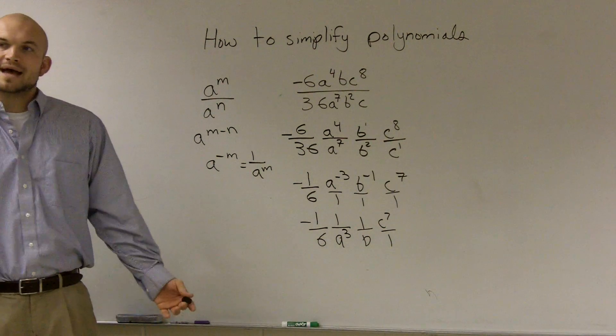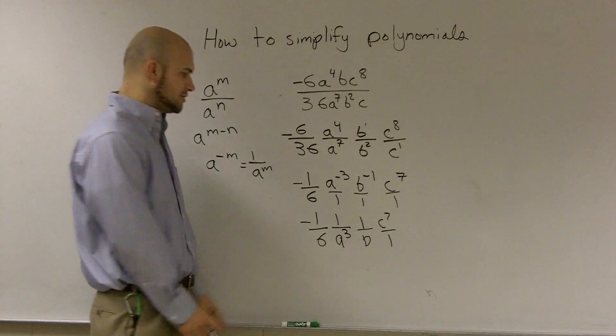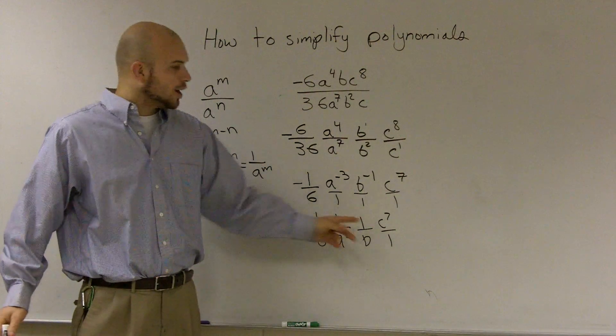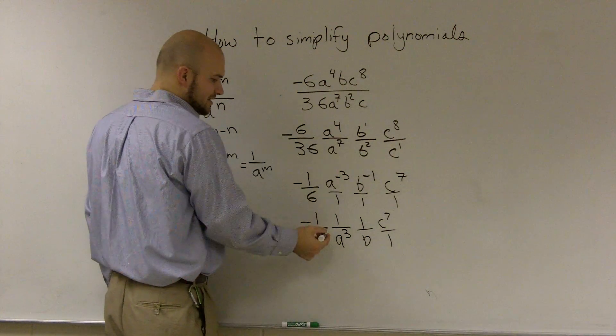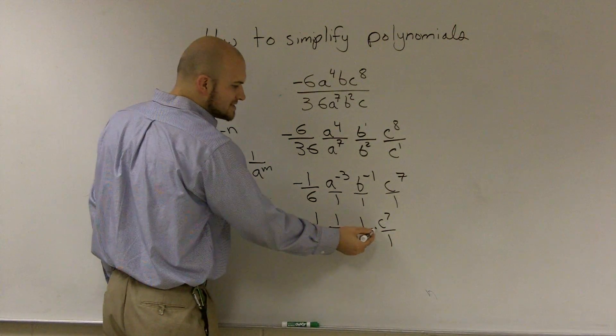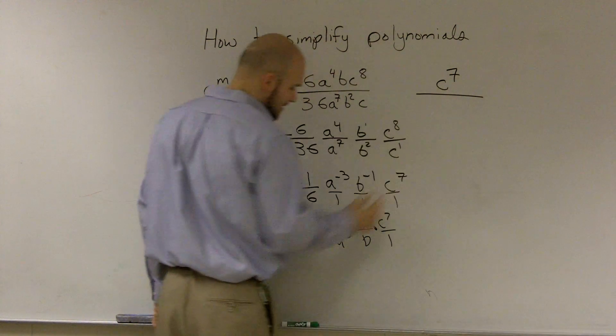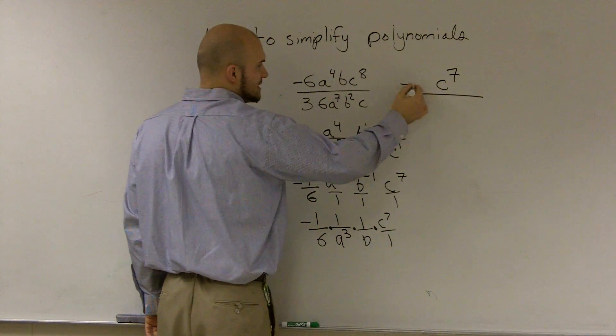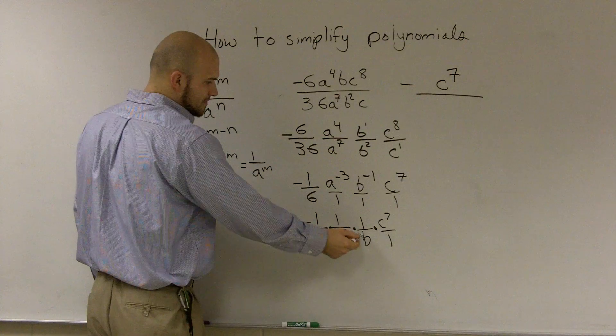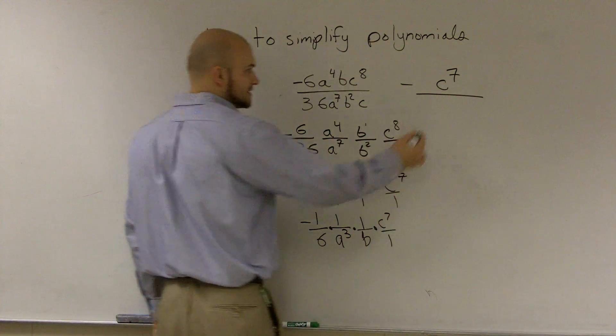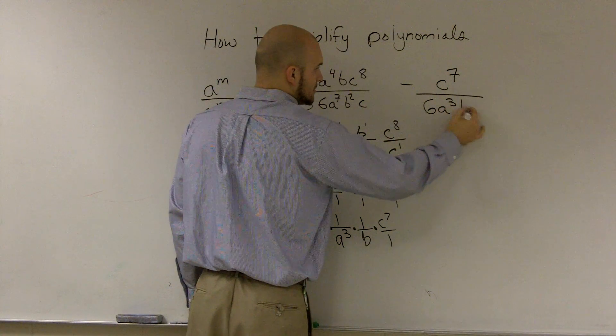Okay, so now, since I have each individual little fraction, now I can just combine them back into one whole polynomial. Do I need to really write all these ones? Because they're just all multiplied together, right? These are still just multiplied together, but I'm separating them out. So really, the only thing on top is c to the 7th. And now on bottom, we'll just write a negative. And on bottom, I have 6 times a to the 3rd times b.